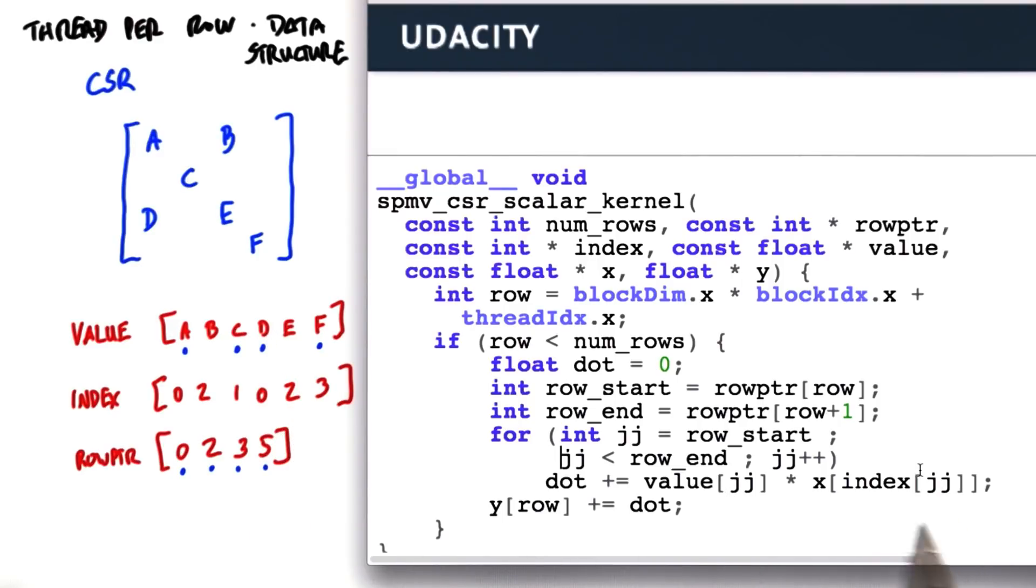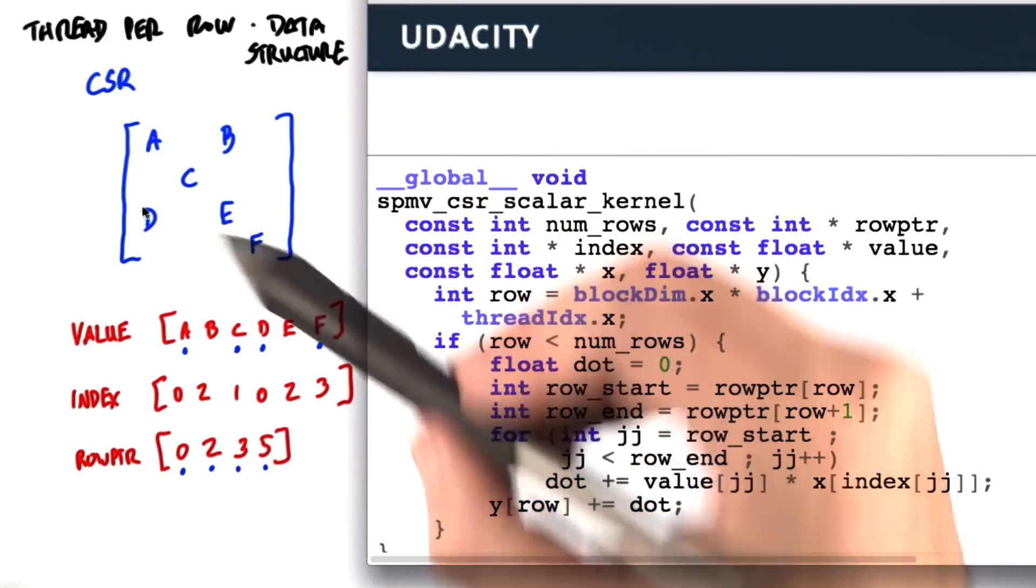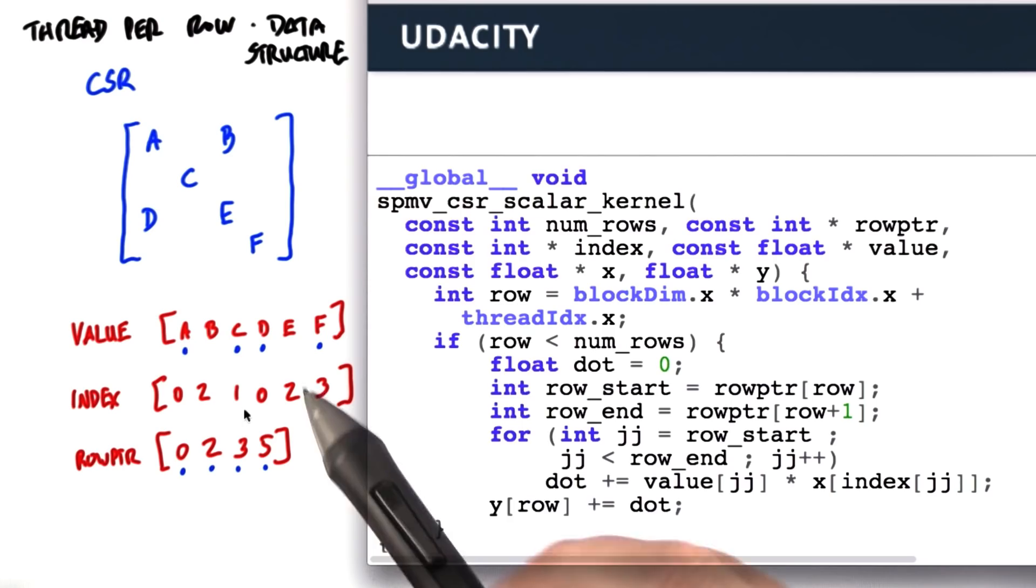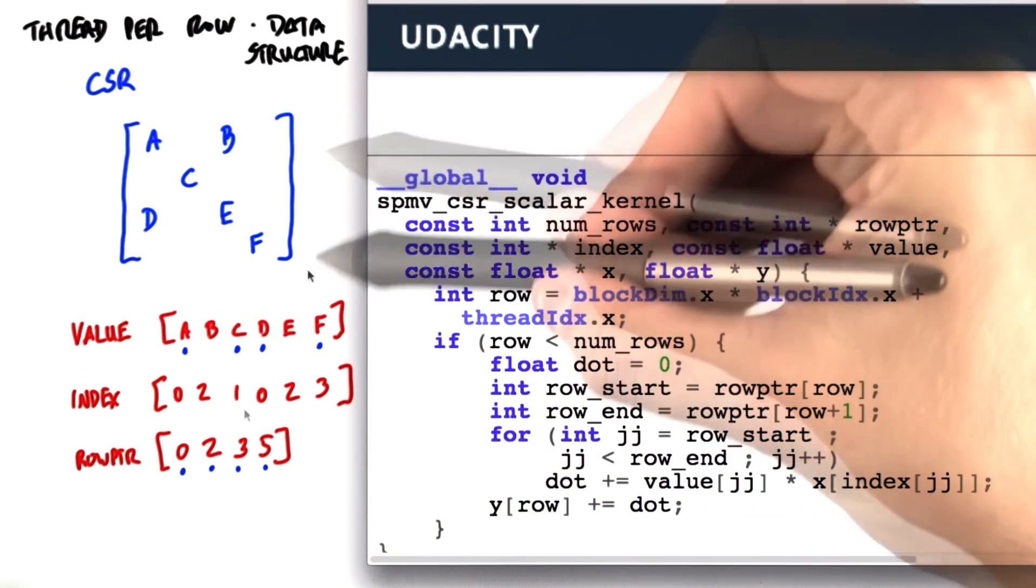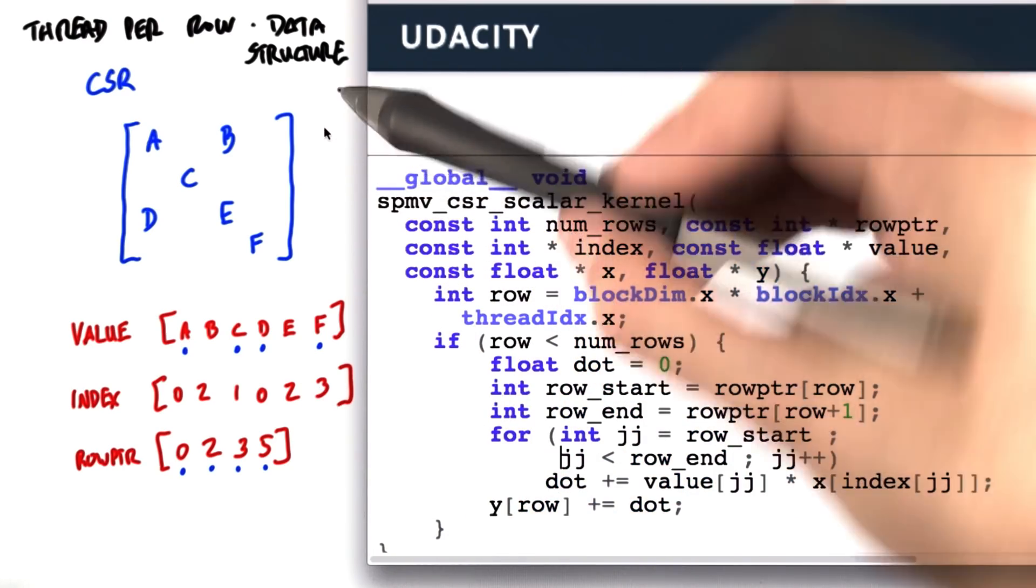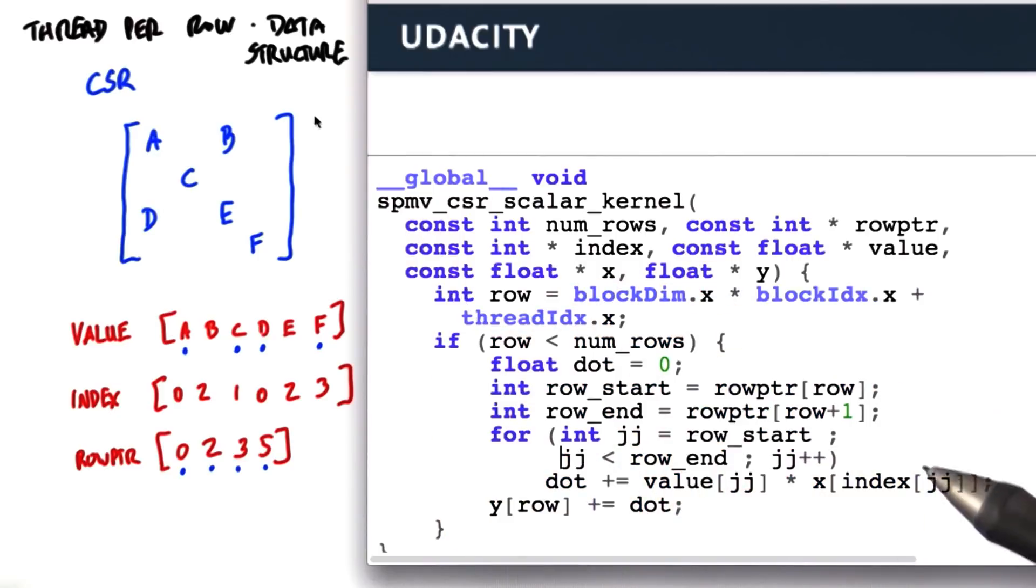And the second is we check which column d is in. In this case, d is in column 0. So we're going to look up the vector element at position 0 and multiply d by that vector element. So that's this value times that vector element. And then add that to dot.